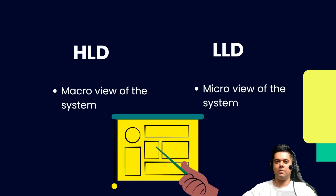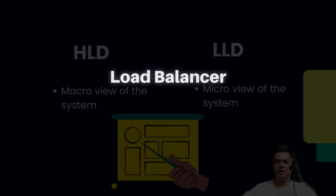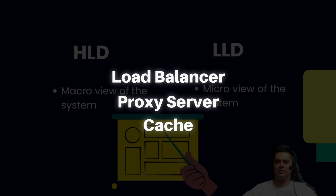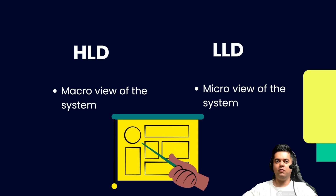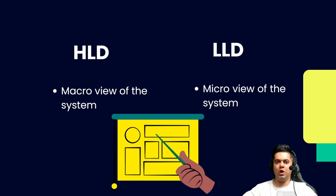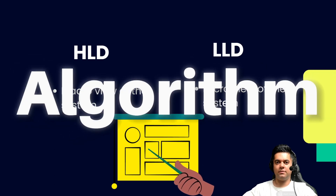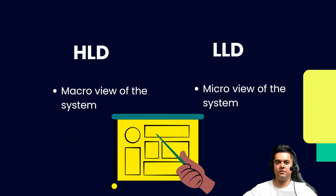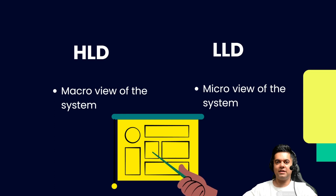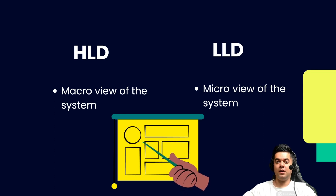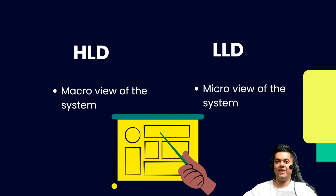In HLD rounds, we talk about the tech components used — like load balancers, proxy servers, and caches — but you won't have to worry about lower level details. For example, the algorithm used by the proxy server or load balancers, or what cache replacement strategy will be used — those are all in the realm of LLD.